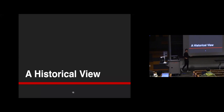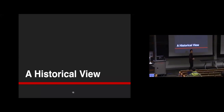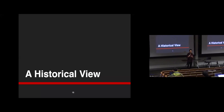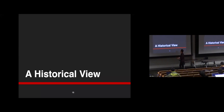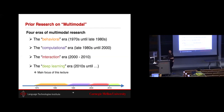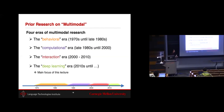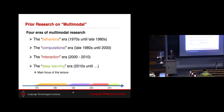Now a brief historical view. Most of you are interested in the deep learning aspect, but there were several years of multimodal ML before deep learning. There was a behavioral era inspired by psychology and neuroscience, then a computational era bringing those theories into the real world, an interaction era looking at dynamic human-human and human-computer interactions, and finally the deep learning boom in the early 2010s.